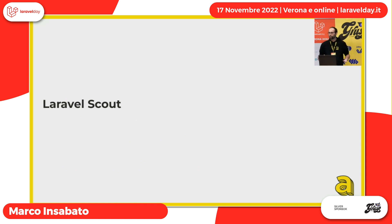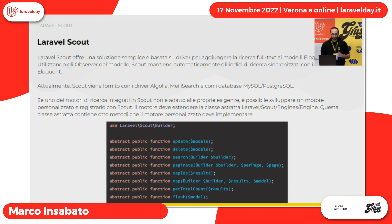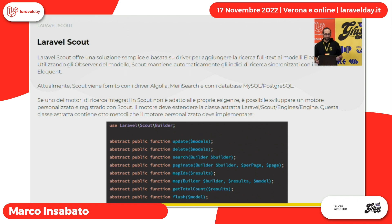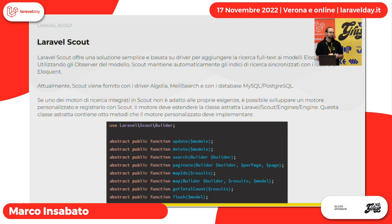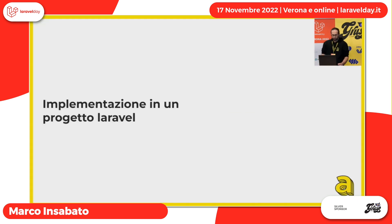Infine abbiamo Laravel Scout, che penso conosciate. Laravel Scout è una soluzione semplice basata su driver per fare ricerca full text — in realtà noi non faremo una ricerca full text. Scout viene fornito con Algolia e Meilisearch, però c'è anche la possibilità di creare driver custom, e quindi noi andremo a creare un engine custom per andare a effettuare la ricerca su Elasticsearch invece di MySQL o Postgres.